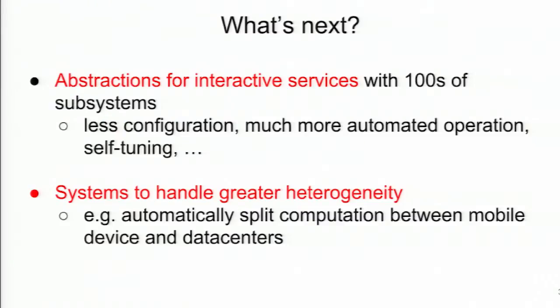What's next? Two interesting areas: first, systems with hundreds of subsystems are very complicated — our search service touches probably 500 different services on every query, and the configuration is not very self-managing. There's a lot of opportunity for less configuration and much more automated operations. Second, because of the decline of Moore's Law, there's going to be more hardware heterogeneity — you already see this with GPUs; Microsoft is experimenting with FPGAs in data centers. Figuring out how to map computations onto heterogeneous collections of devices is going to be interesting.